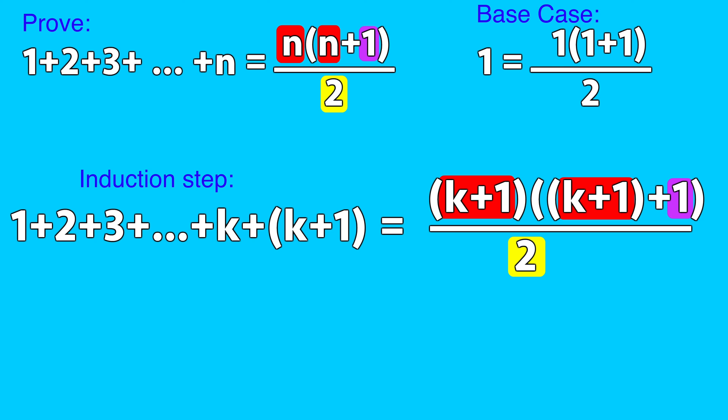This shows that if the formula works for an arbitrary number k, it also works for the next number, k plus 1. By the principle of mathematical induction, the formula is therefore true for all natural numbers n.